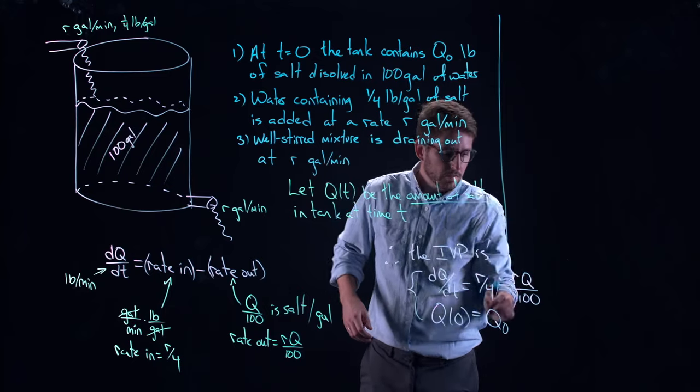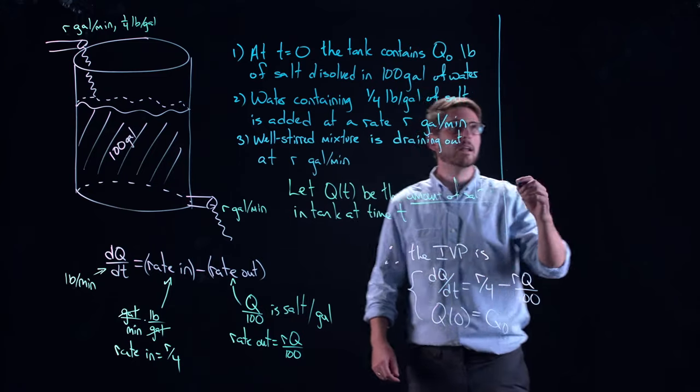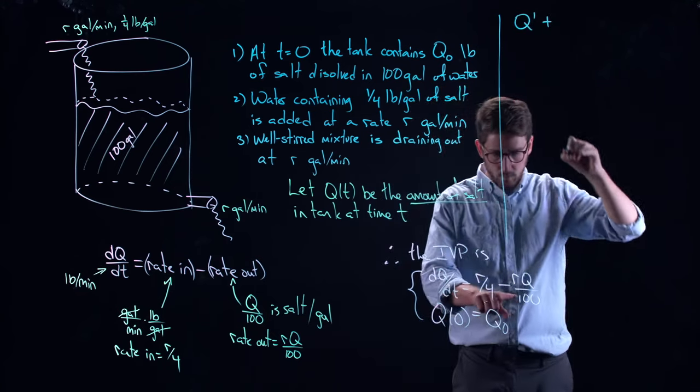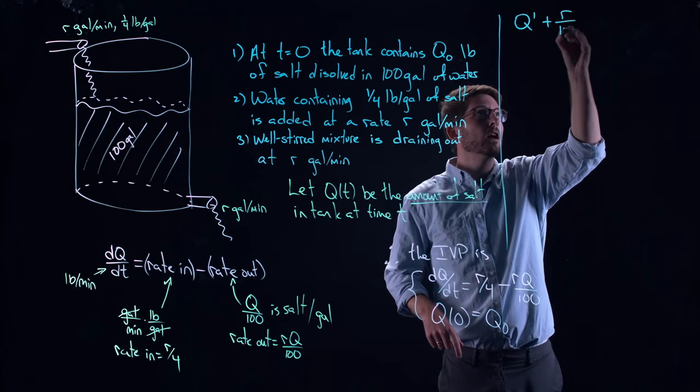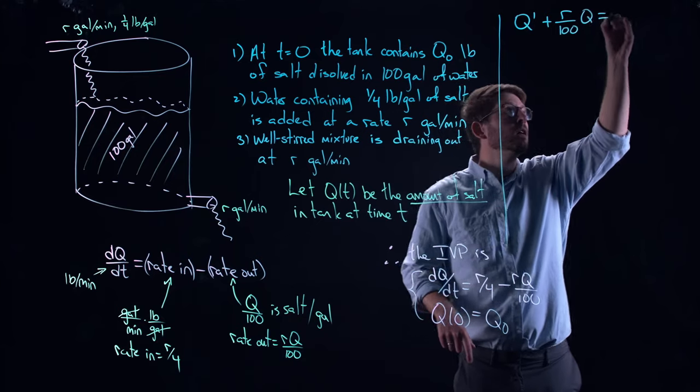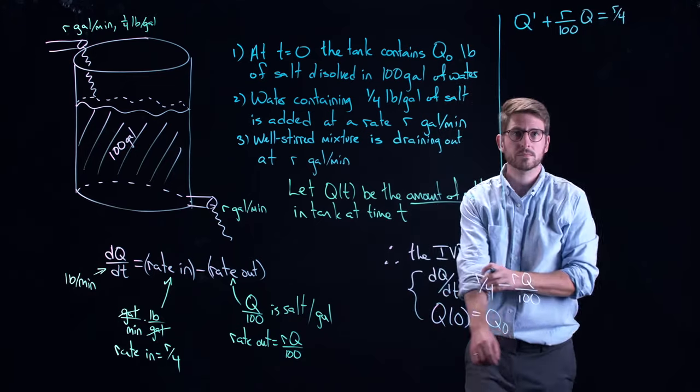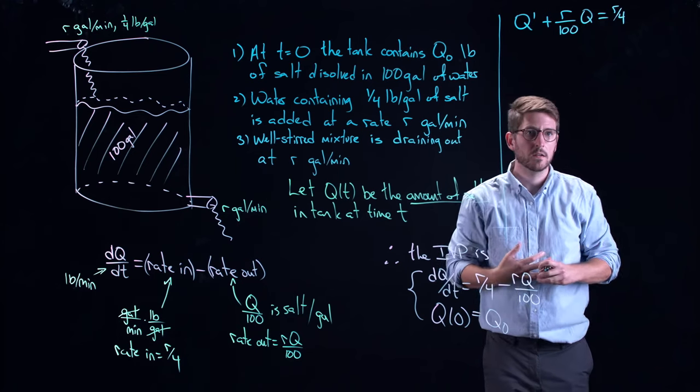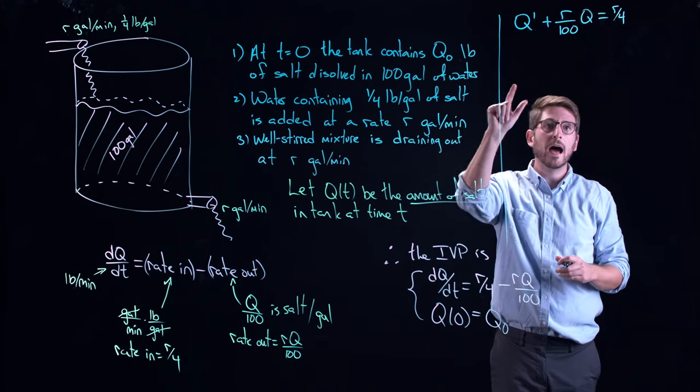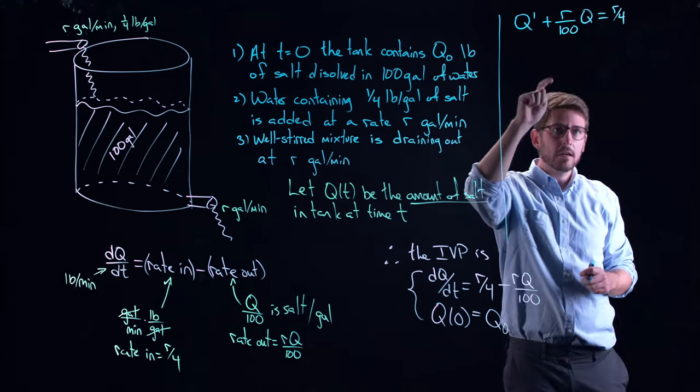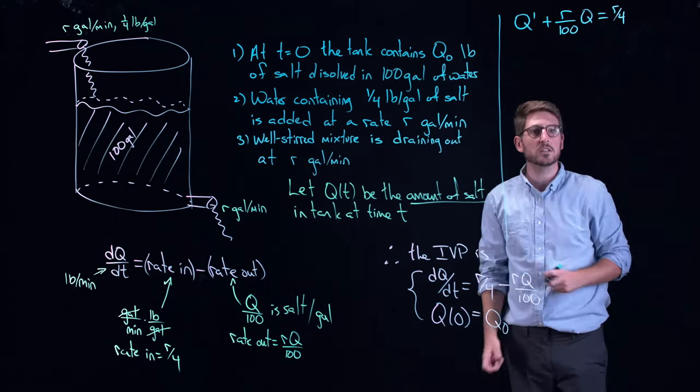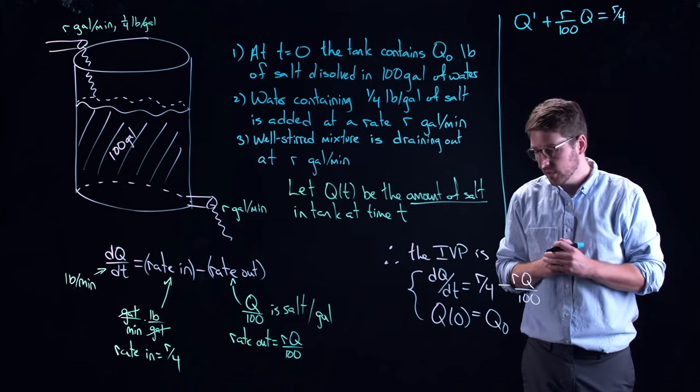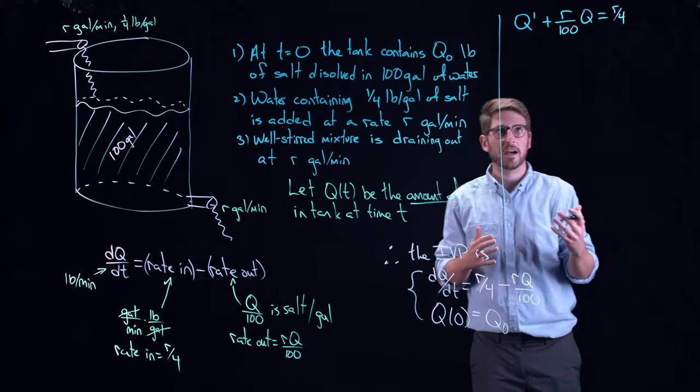So this differential equation, if I rewrite it, so let me write it as Q prime plus, once I pull this piece over, R over a hundred Q is equal to R over four. Why did I write it like that? Because I want a light bulb to turn on in your head. And in particular, I want you to say, ah, that is a first order, linear, ordinary differential equation. And I know what to do with that type of equation because Jason told me two lectures ago. What he told me was that I need to use an integrating factor.